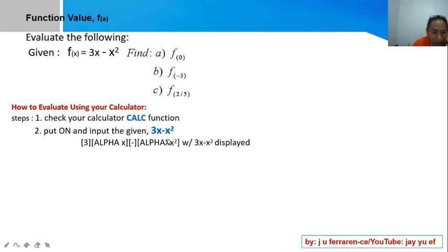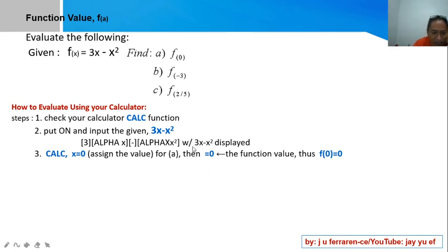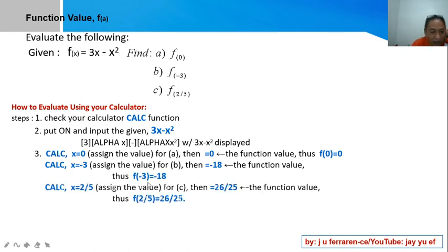Once the function is displayed, use the function-calculate key. For part a, assign x = 0, press equals, and 0 appears as the function value, confirming f(0) = 0. The function remains stored, so for part b press calculate again, assign x = -3, press equals, and the value is given. For part c with x = 2/5, follow the same process and you arrive at the answer easily.